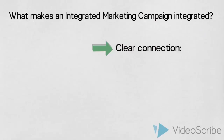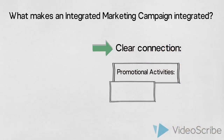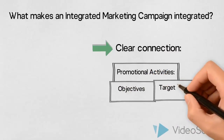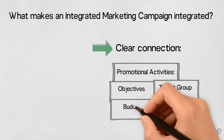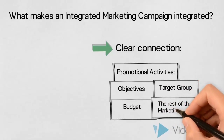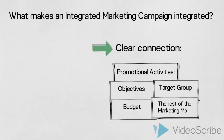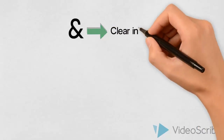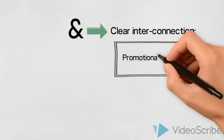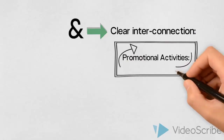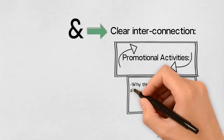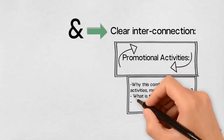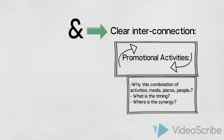So there must be a clear connection between the chosen activities and the objectives — what we want to achieve — between the chosen activities and the target group, and between the chosen activities and the budget. We must also make sure that the chosen activities, our choice of media and content, supports the rest of the marketing mix. Another and perhaps the most central aspect of the integrated approach is whether the different promotional activities are interconnected and support each other. Maybe the different activities are aimed at different parts of the target group, timing has been considered, or they engage with the target group in different ways, at different times or in different places. Is there perhaps a combination of online and offline activities? Does the combination of activities create synergy?